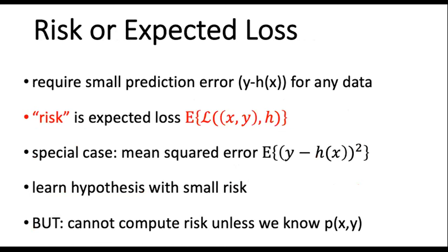A main reason for using the IID assumption is that it allows us to define optimality or optimal predictors in a strict mathematical sense. A widely used optimality criterion is the expected loss, or risk. The risk is the expectation of the loss incurred by a given hypothesis h on a random data point drawn according to the distribution p(x, y). The optimal predictor is then the hypothesis h that has minimum risk. However, in general we do not know the probability distribution p(x, y), and therefore we cannot simply evaluate the expectation in the definition of the risk.